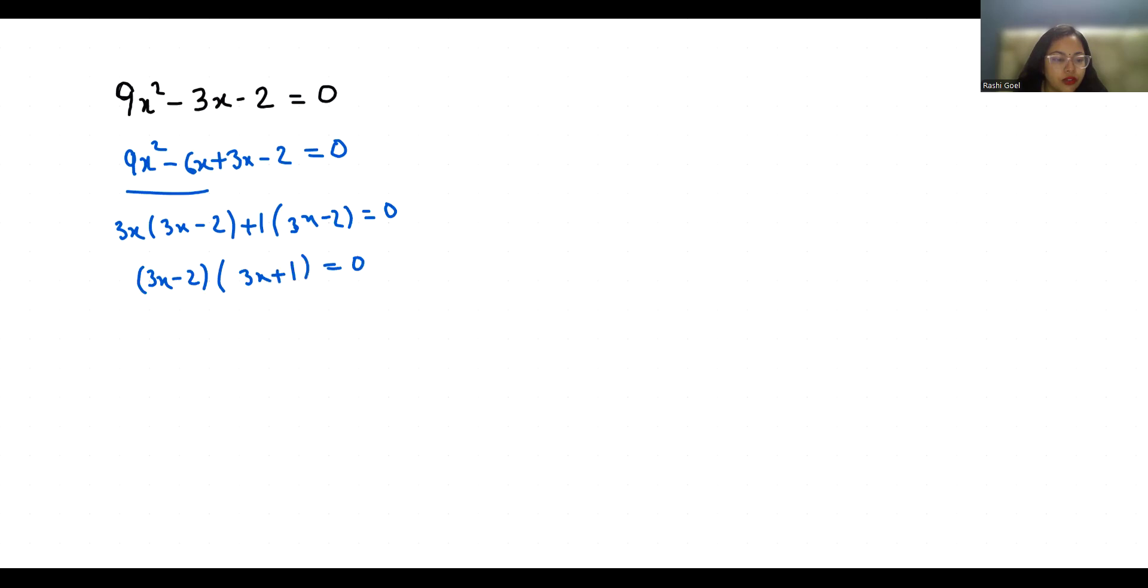If 3x - 2 = 0, then 3x = 2, so x = 2/3. And if 3x + 1 = 0, then 3x = -1, so x = -1/3.